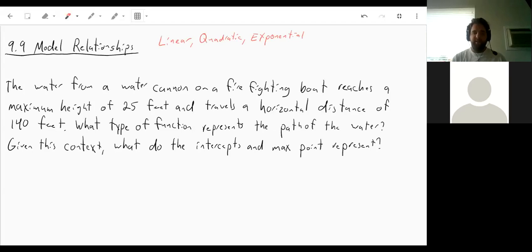And I'll try to give you some hints as to how to recognize which is which as well. So the first one, we have the water from a water cannon on a firefighting boat reaches a maximum height of 25 feet. I'm just going to stop there for a second because I'm seeing that word maximum height. When we're talking about a linear equation or a linear graph, it keeps going in a straight line forever. There's no maximum. When we're working with an exponential graph, it either starts pretty much at zero and goes up and doesn't have a maximum, or it starts pretty close to zero and goes down, but it doesn't actually have a maximum. It just never finishes getting closer to zero.